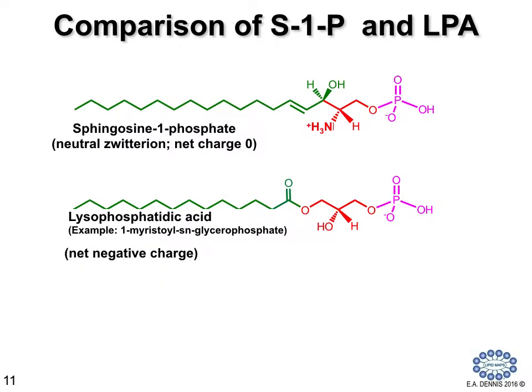Similarly, sphingosine 1-phosphate is very similar to lysophosphatidic acid, as shown here. The difference is primarily that extra double bond and hydroxyl group in the sphingosine molecule. But they are very specifically different and distinct chemical structures that bind to distinct and different G-protein-coupled receptors.